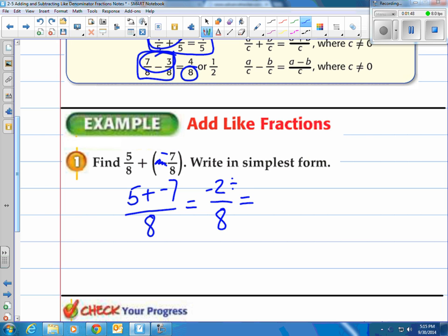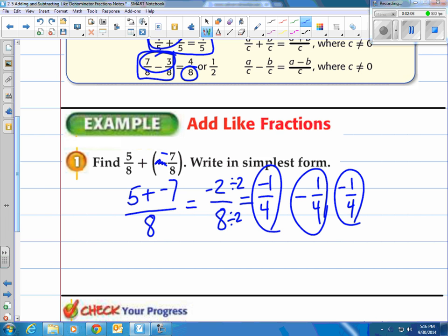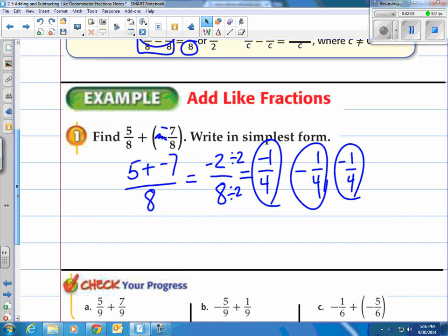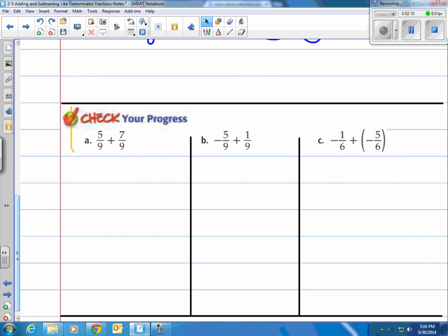Now, we've got to reduce. I know that 8 and 2 have a common factor of 2, so I divide that out and I have negative 1 over 4. So that's negative 1 fourth. And you can write that as negative 1 fourth or negative 1 over 4. These are the two I would prefer. I'll let you give it a shot here. Pause the video. Try these three. Come on back. See how you did.